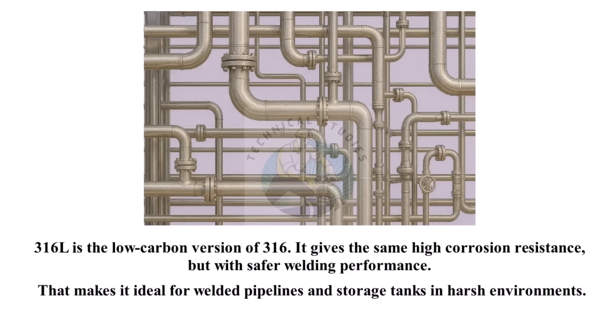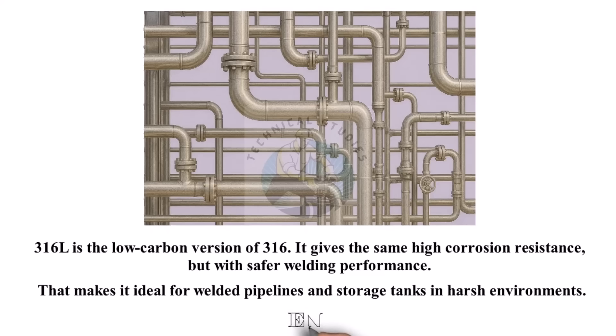So, in short: 304 is common and economical, 304L is for welding, 316 is for salt water and chemicals, and 316L is for welded equipment in tough conditions.